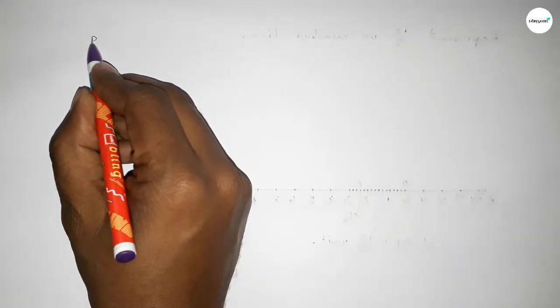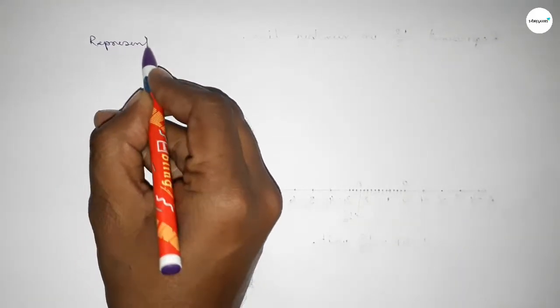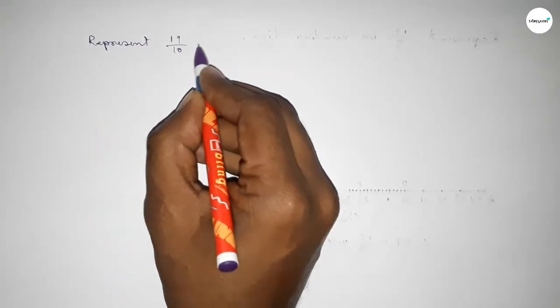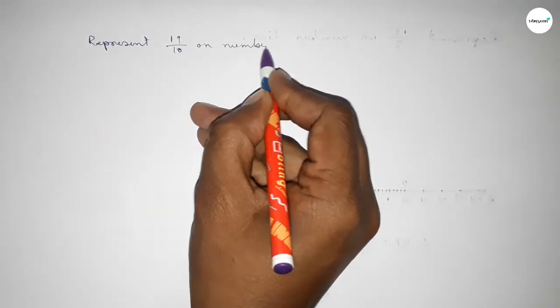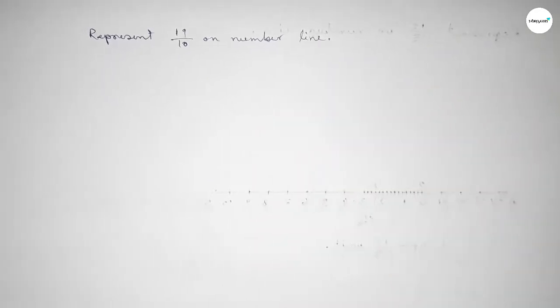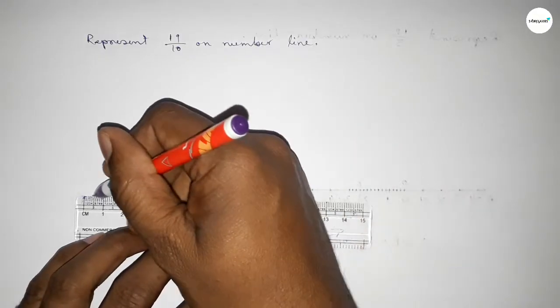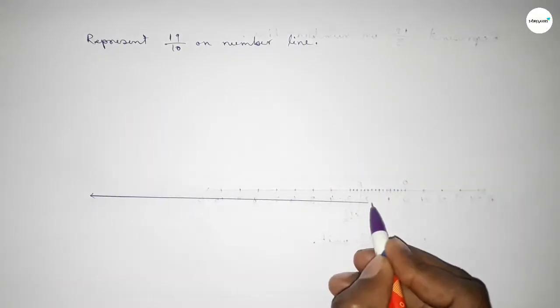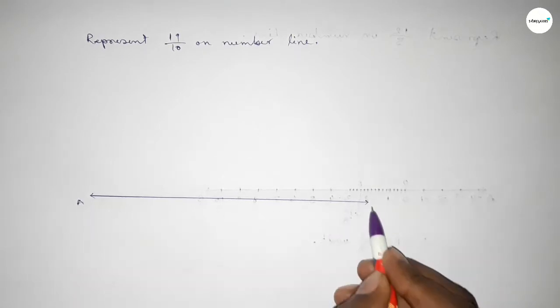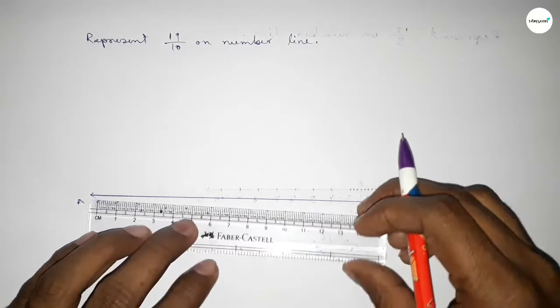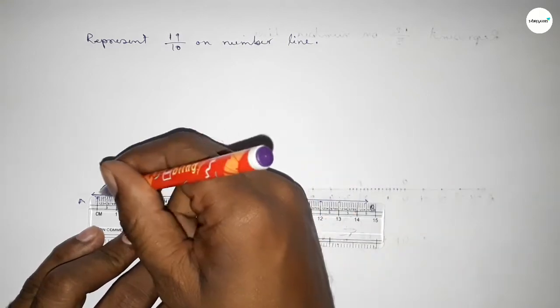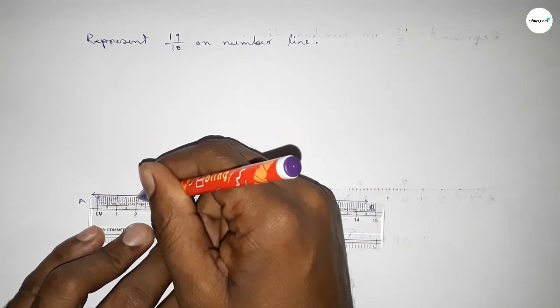Hi everyone, welcome to SA Share Classes. Today in this video we have to represent 19/10 on a number line. So let's start the video. First of all, we have to draw the number line. Drawing a line and taking arrow marks on both sides - this is a number line.